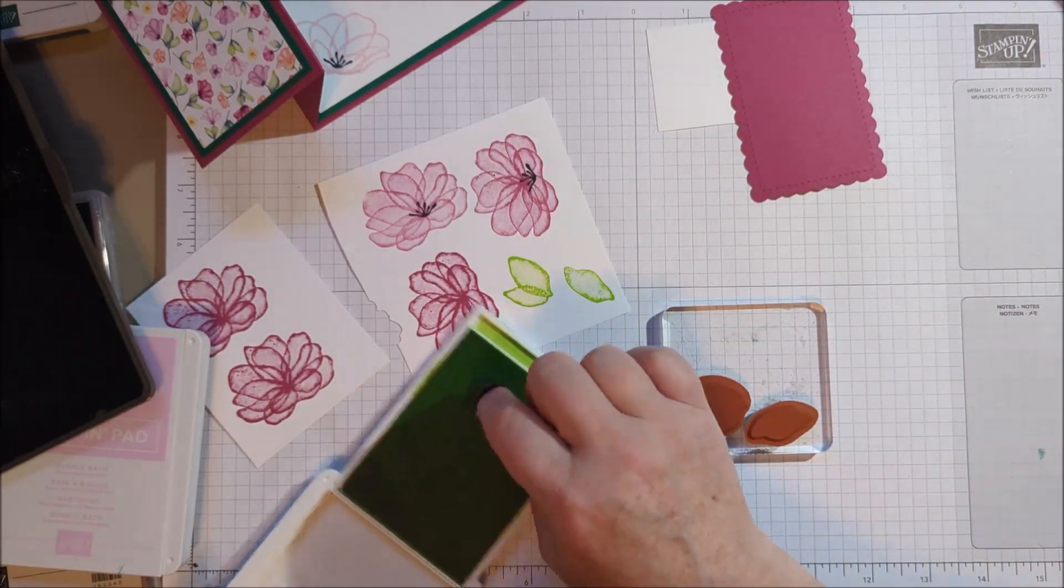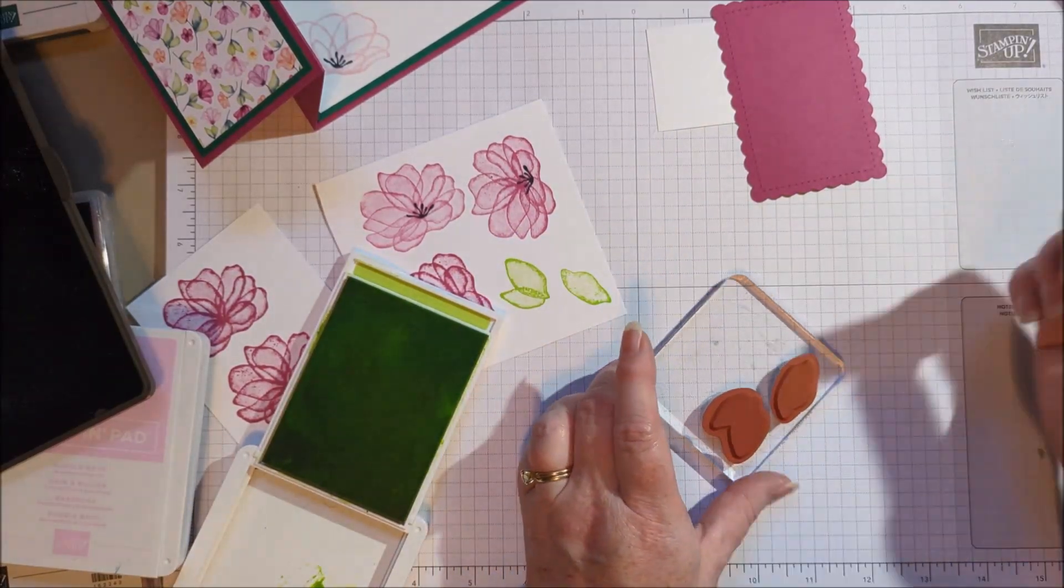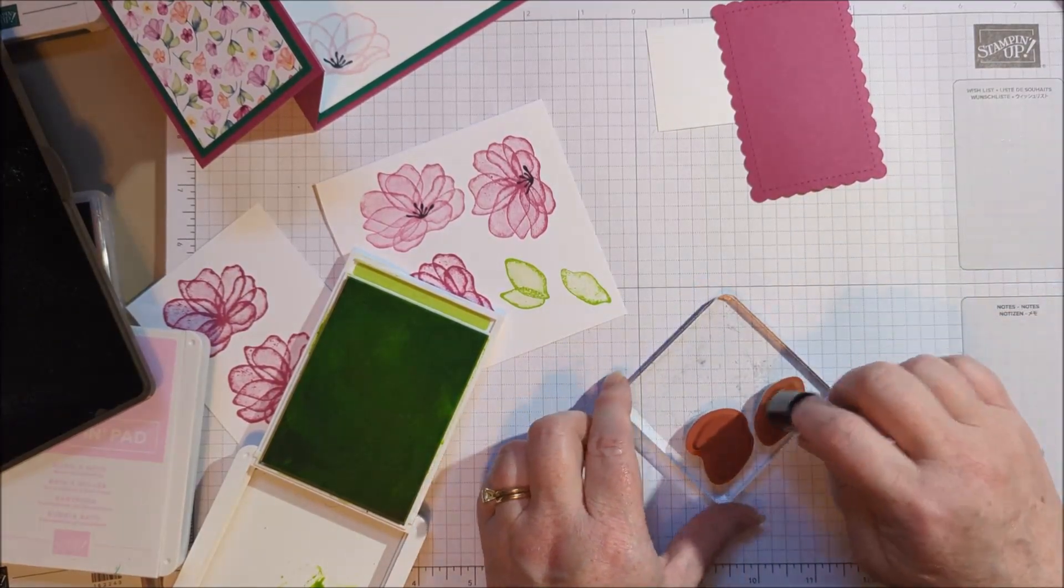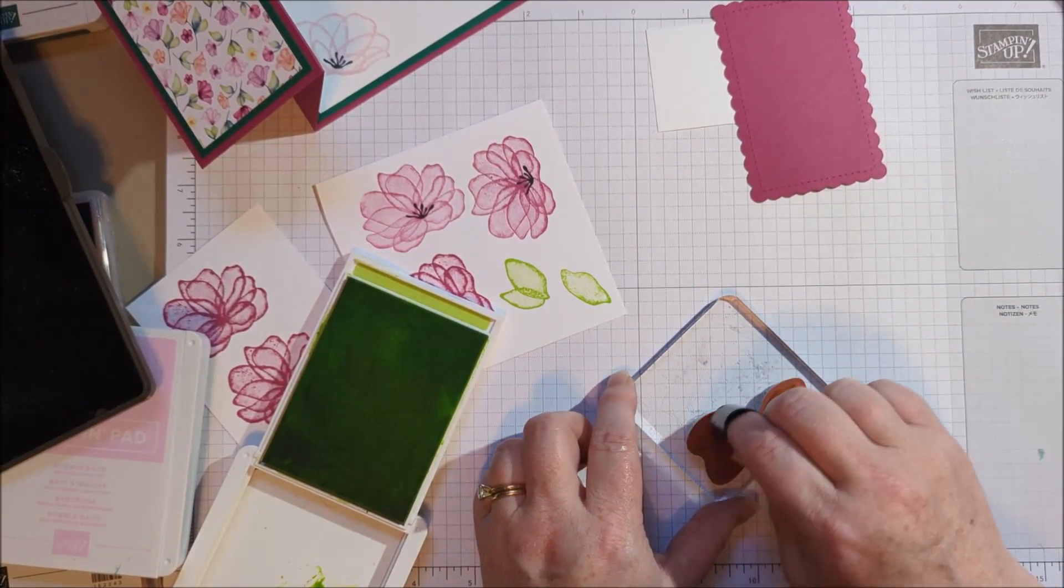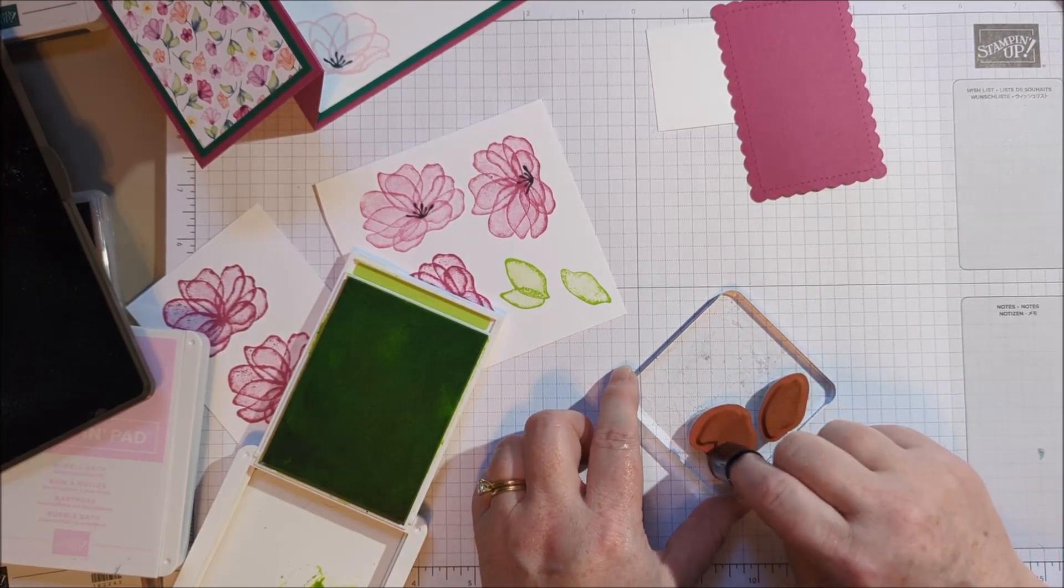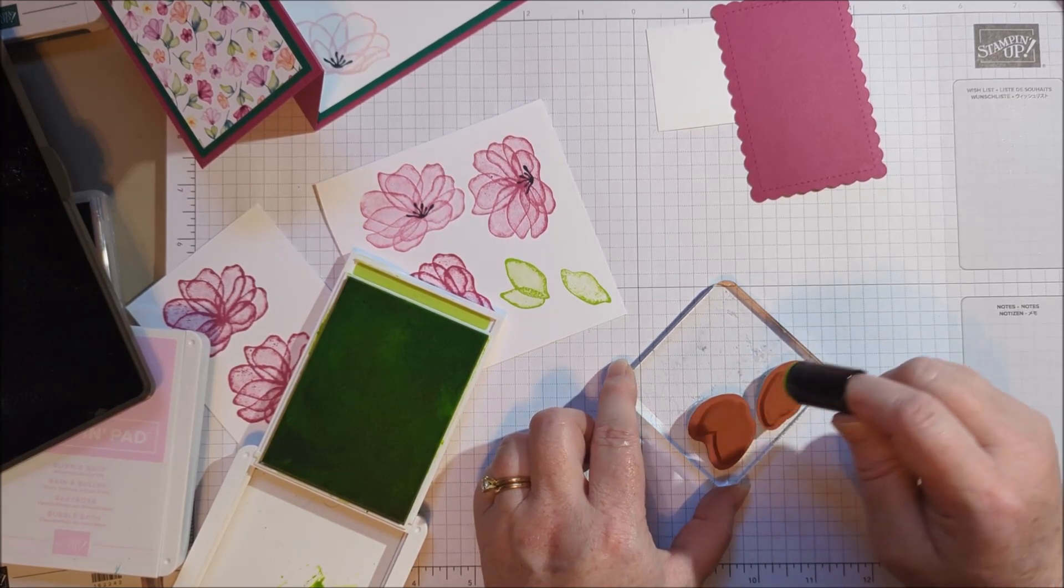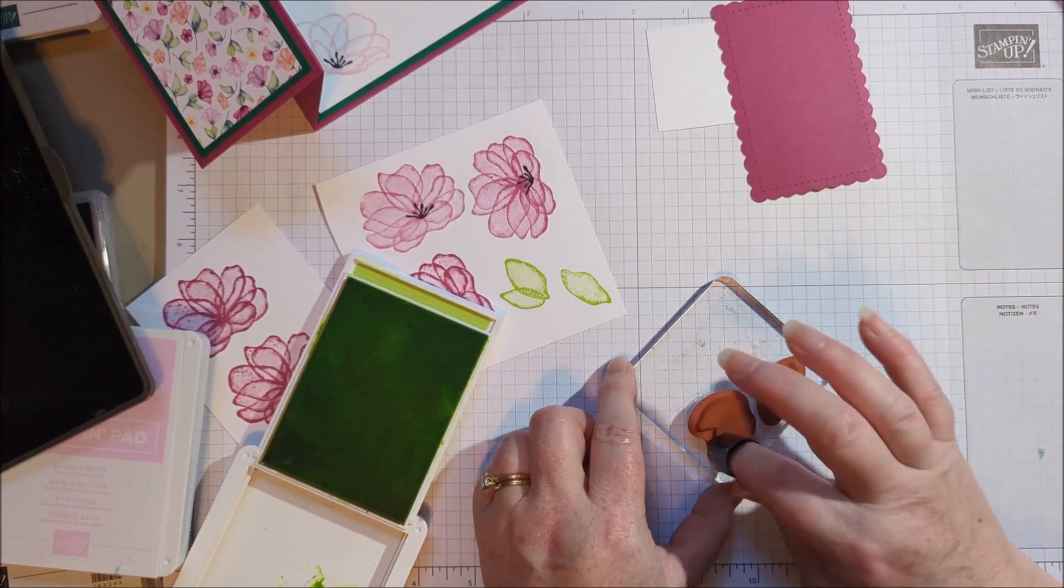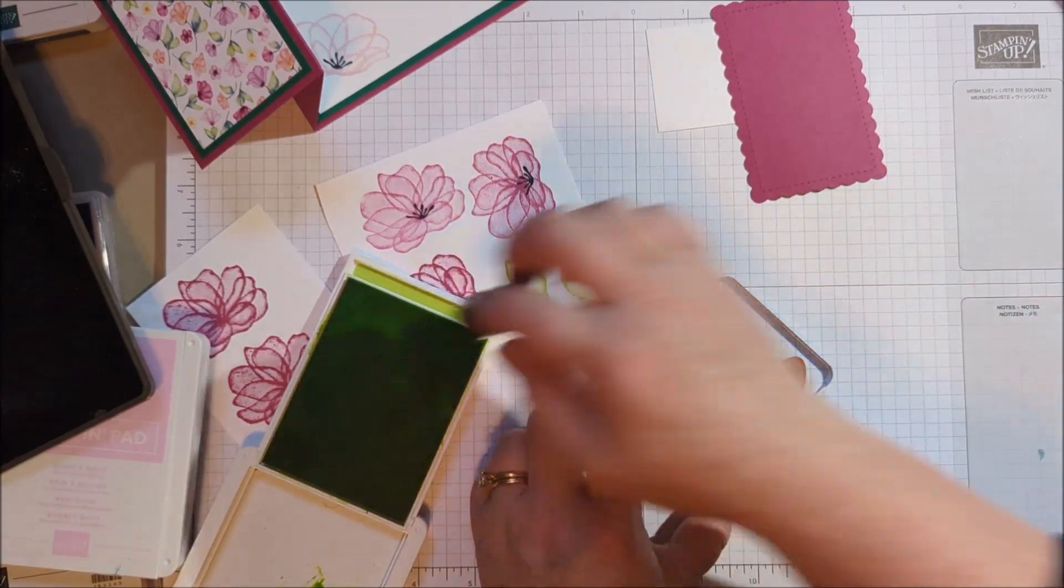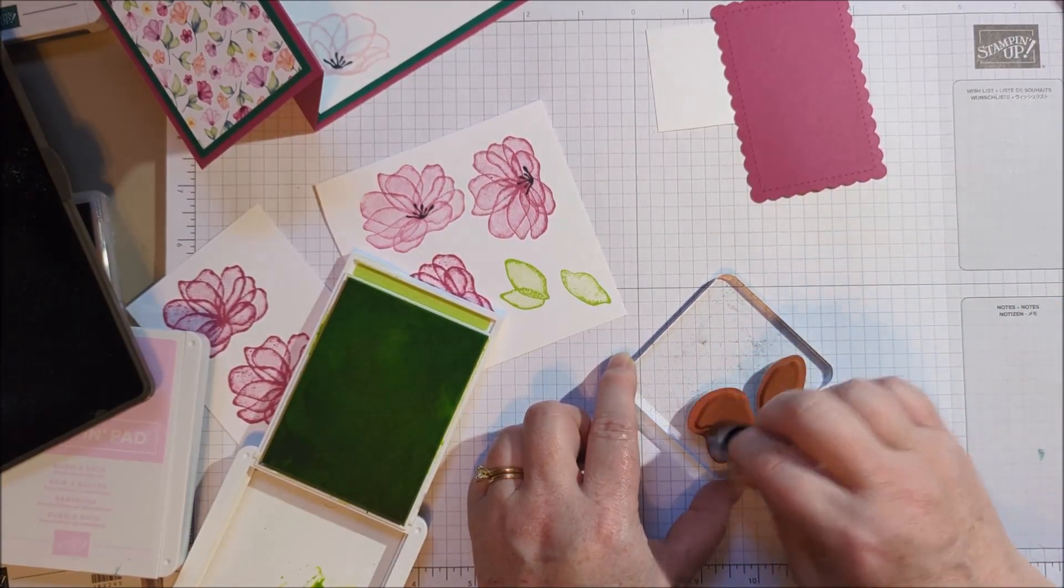So I'm using a different sponge dauber so that I don't get pink in my green. Now I don't have a sponge dauber for every single color. What I do have is a sponge dauber in multiple color families. Like I'll use the green dauber for a lot of greens. I'll have maybe a couple different greens because some of our greens are very dark, like mossy meadow or shaded spruce. And then we've got some that are very limey, like Parakeet Party or Lemon Lime or Granny Apple.